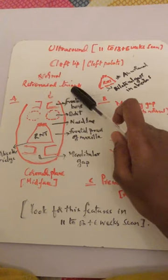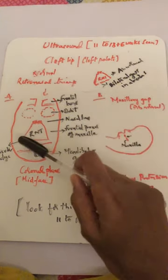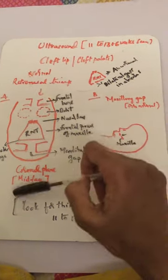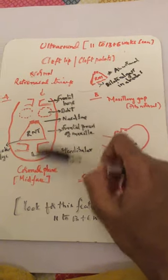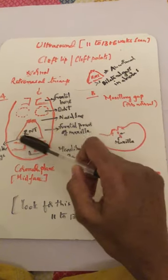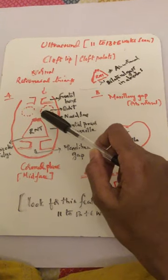One is the normal retronasal triangle. This is a coronal plane midface: this is the frontal bone, this is the orbit, this is the mandible with the mandibular gap. This is the retronasal triangle.